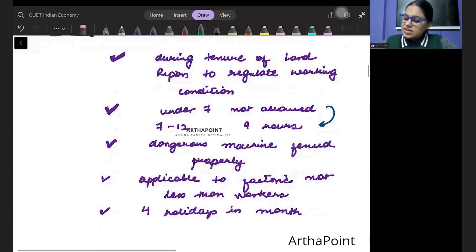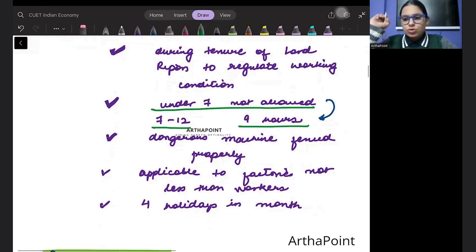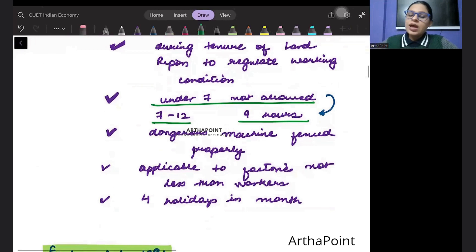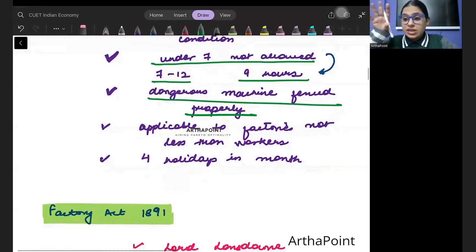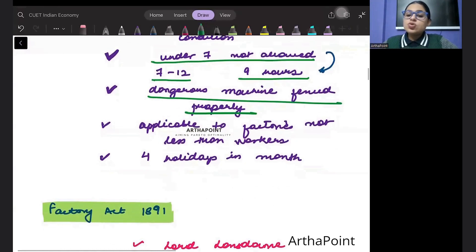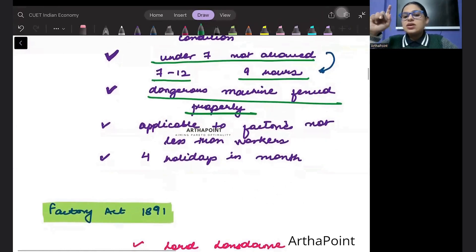What happened? He came ahead and said that working under seven years was not allowed in the factory and between seven to twelve years you could not work more than nine hours. Dangerous machine was to be used very carefully and it was only applicable to factories which had very few workers. It is not yet applicable to the agricultural sector, but this is only applicable to the factories.